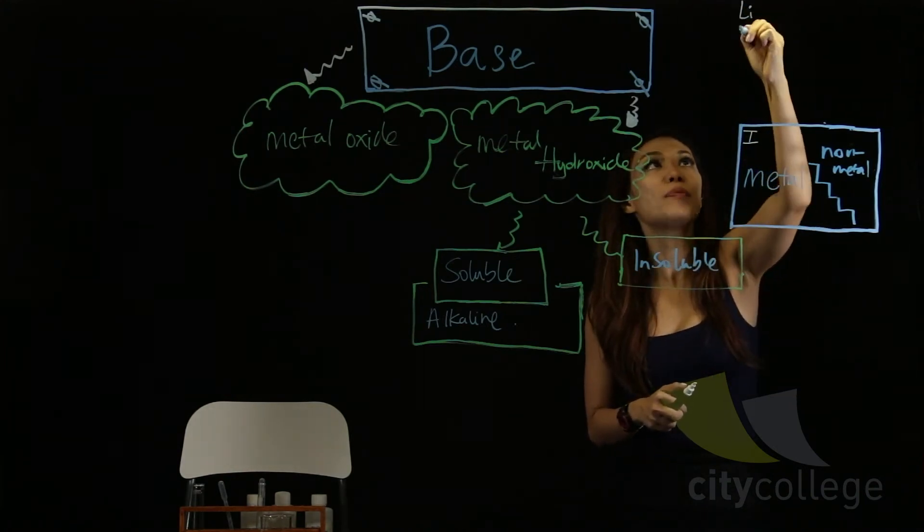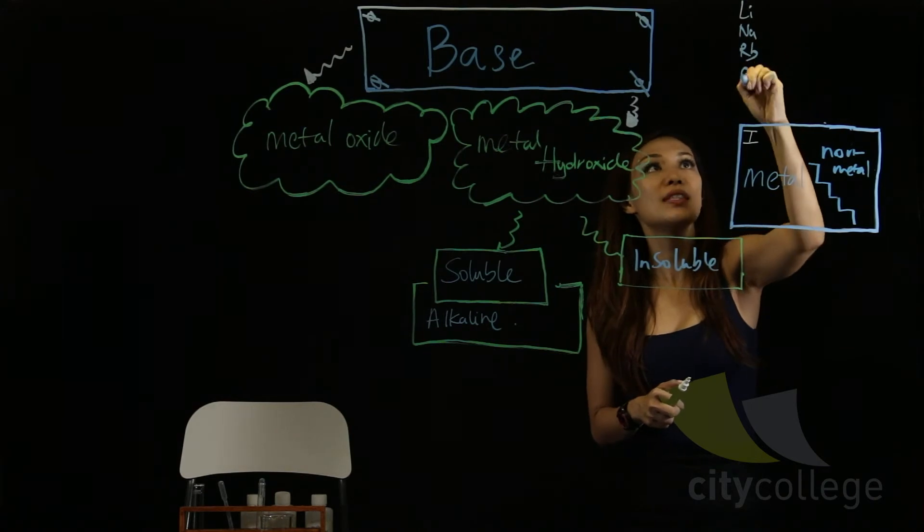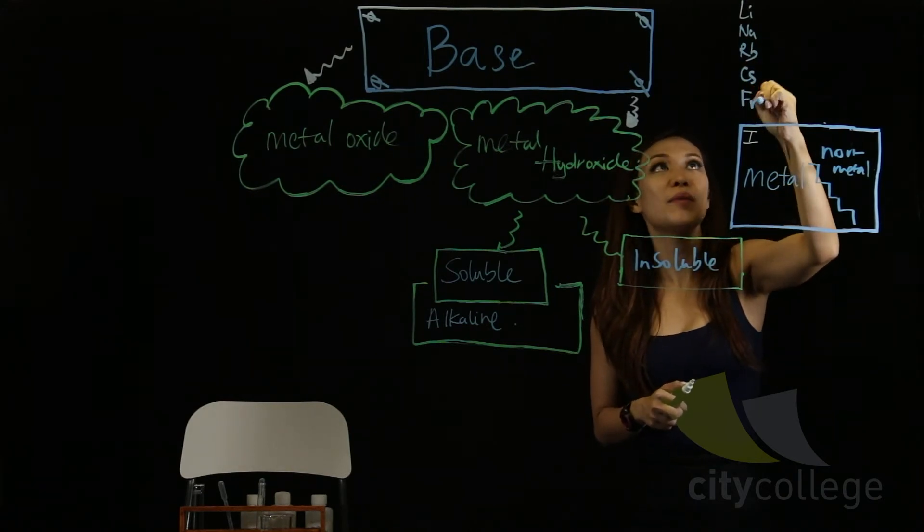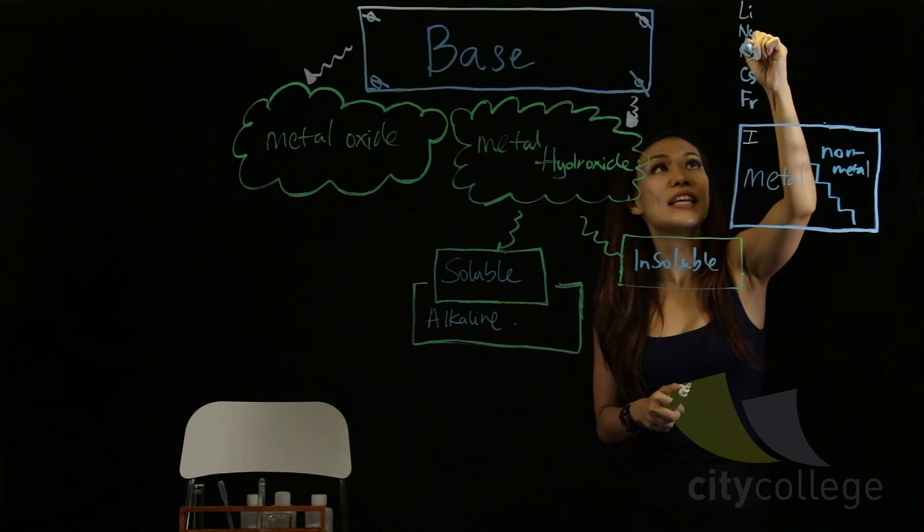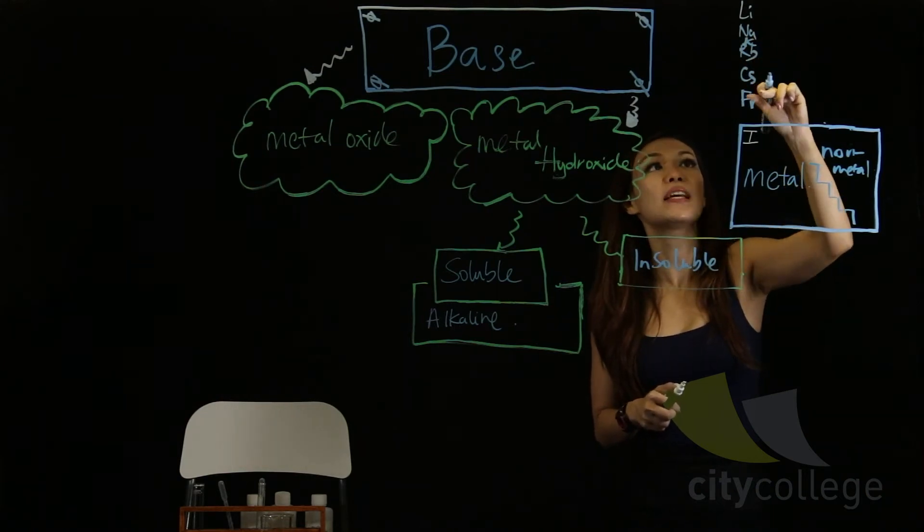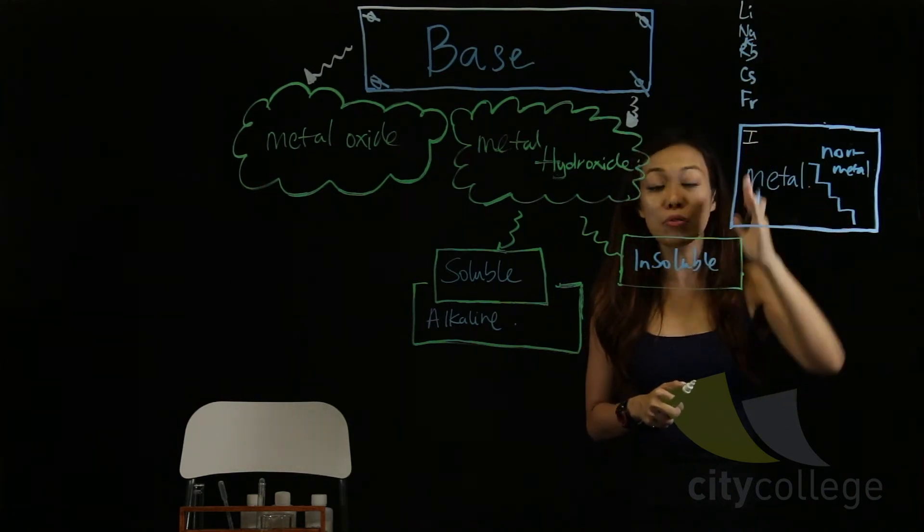In group one, we have lithium, sodium, rubidium, caesium, and franzium. Okay? Lithium, sodium, potassium. I'm sorry. Potassium, rubidium, caesium, and franzium. So, these are your group one metals.